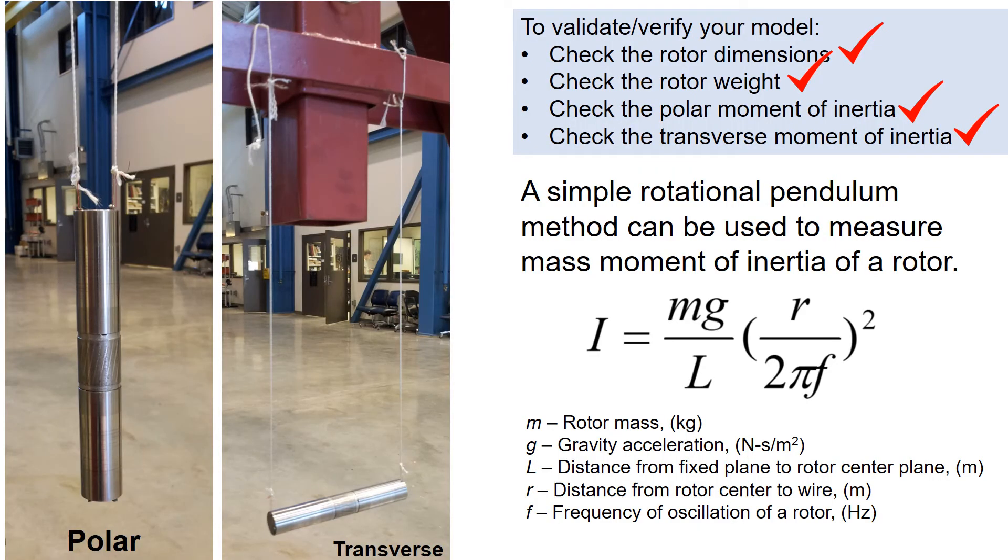You could estimate both polar and transverse moment of inertia by using a simple pendulum method where the equation is shown here. The measurements were conducted with pendulum oscillation of a small rotational angle, less than 10 degrees.